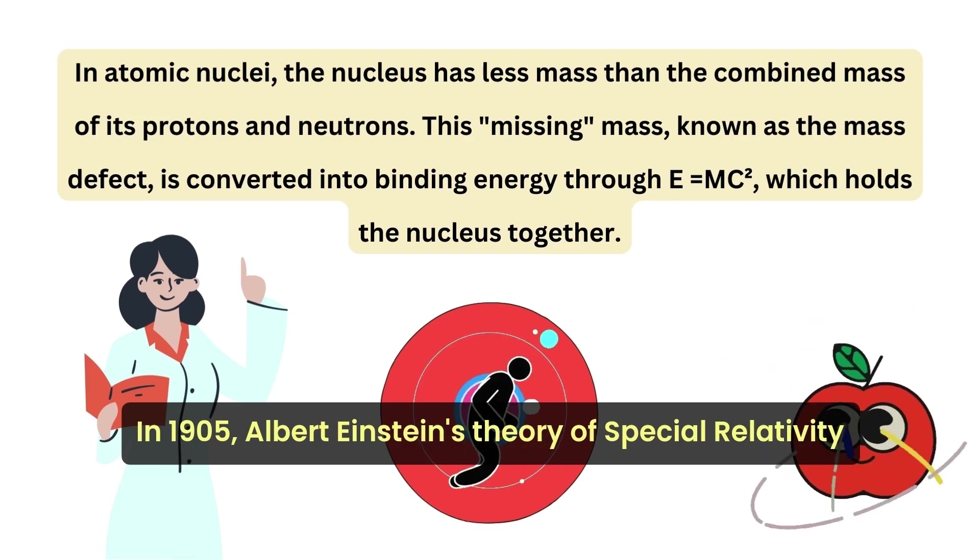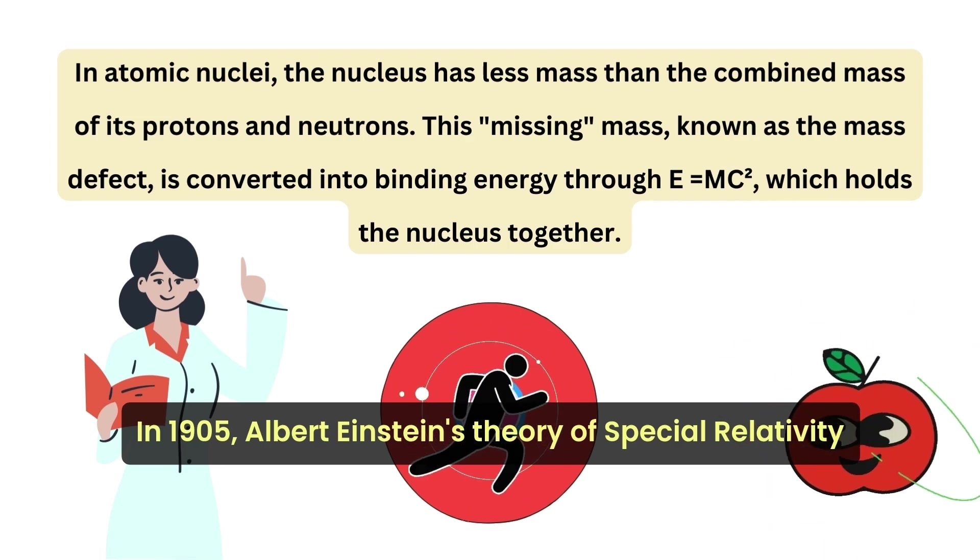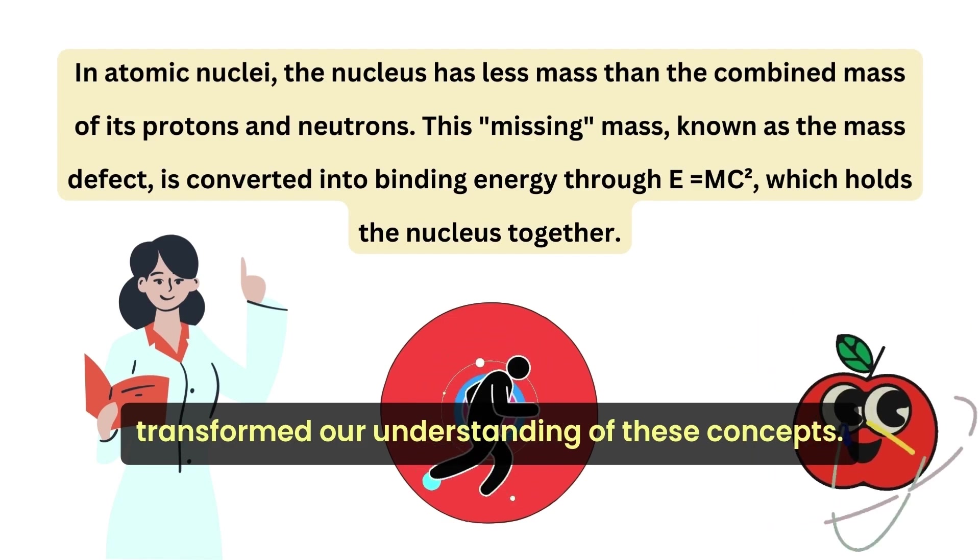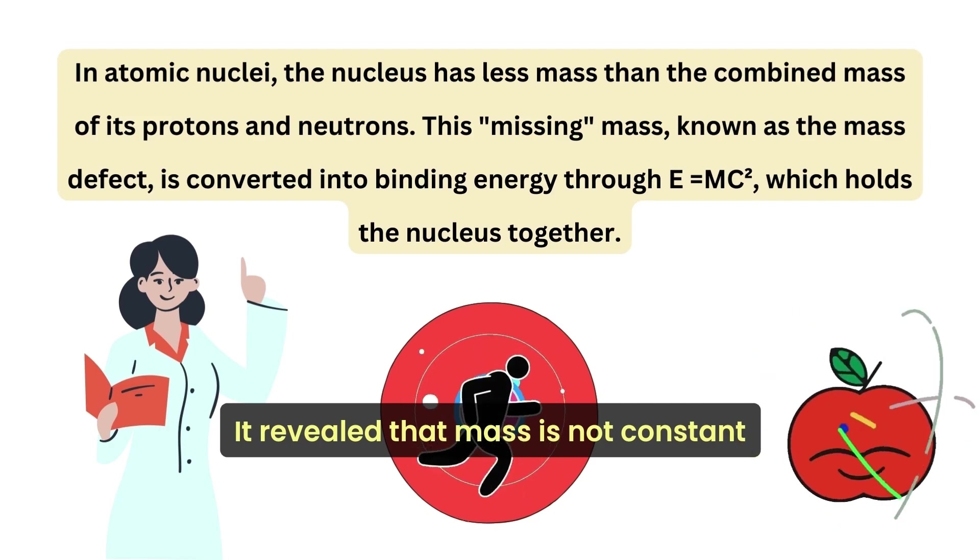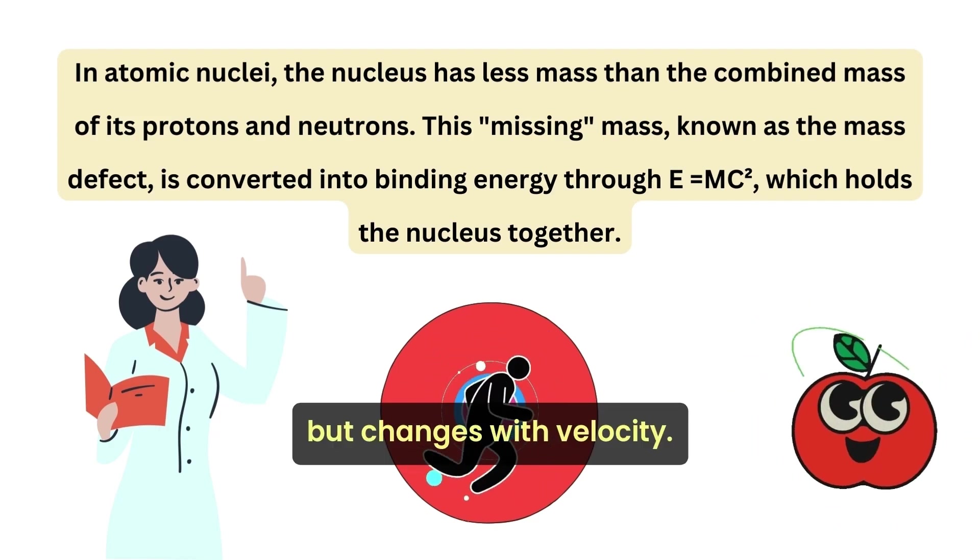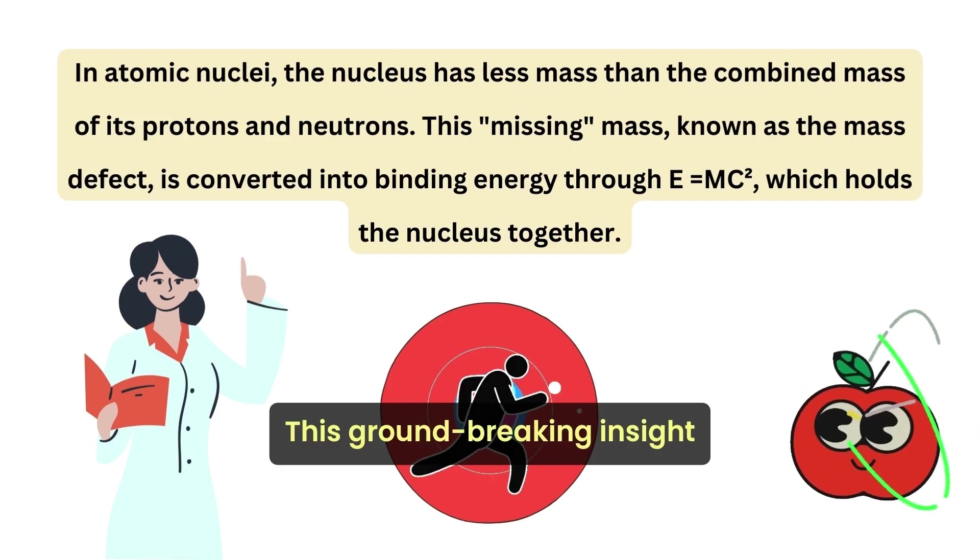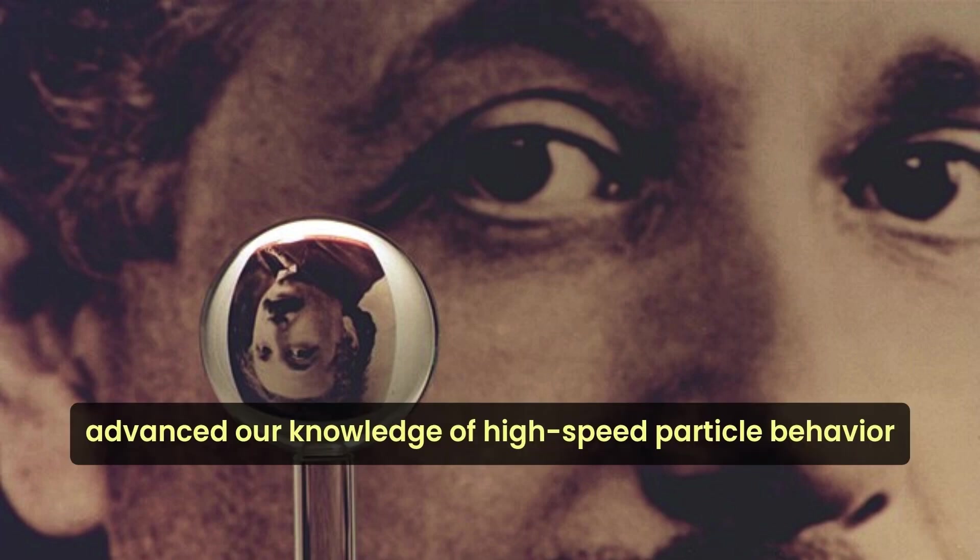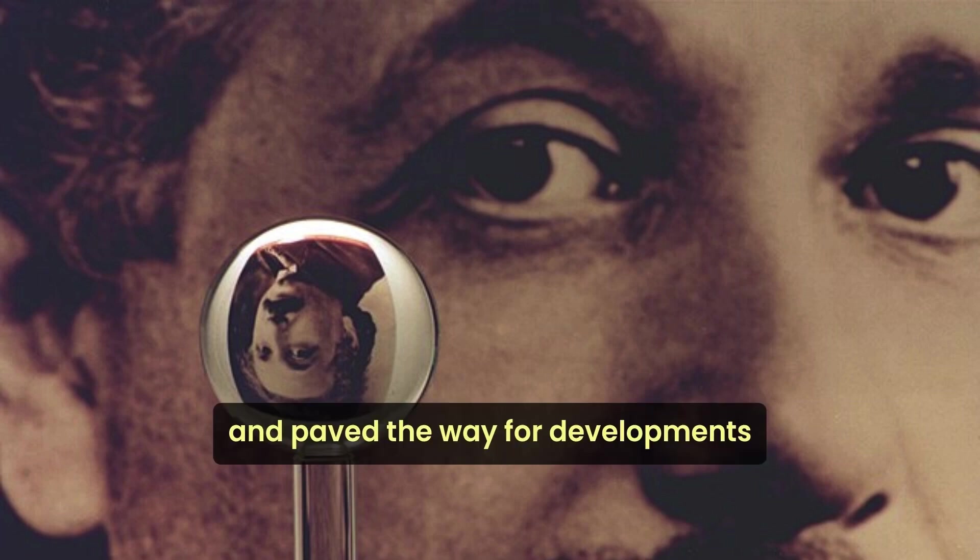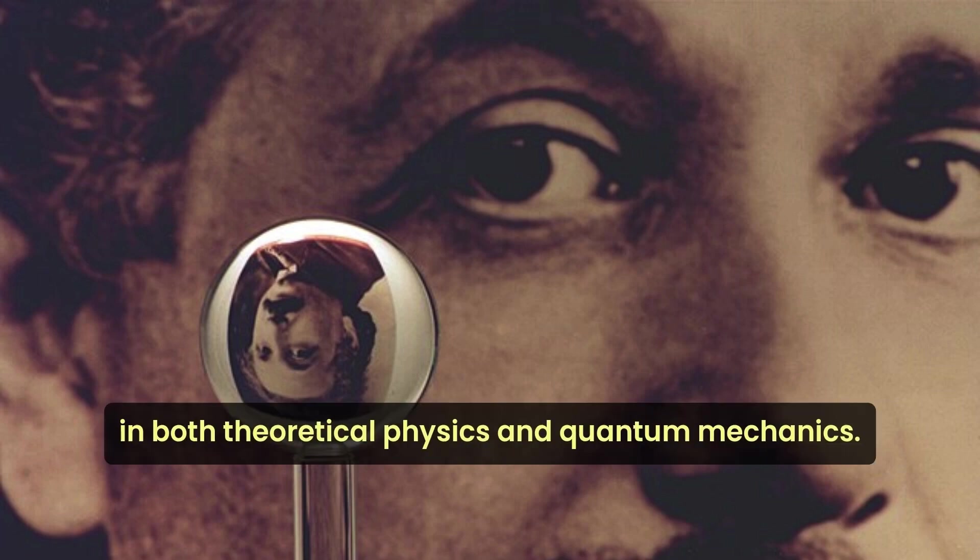In 1905, Albert Einstein's theory of special relativity transformed our understanding of these concepts. It revealed that mass is not constant, but changes with velocity. This groundbreaking insight into the relationship between mass and velocity advanced our knowledge of high-speed particle behavior and paved the way for developments in both theoretical physics and quantum mechanics.